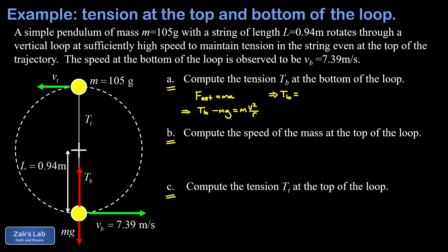Solving for tension symbolically, T_b equals m times the quantity (g plus v² over r). Substituting in numbers: mass is 105 grams converted to 0.105 kg, g is 9.8, speed at the bottom is 7.39 m/s, and the string length is 0.94 m. Running the numbers to three significant digits gives 7.13 newtons for the tension.